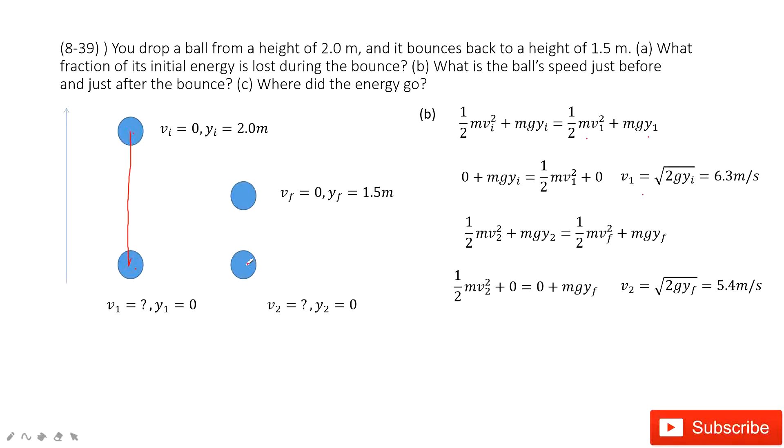Similarly, we consider from V2 to the final position. In this process, only gravity does the work, so mechanical energy is conserved. The energy at position 2 equals the energy at the final position. Inputting the known quantities v_f and y2, we get that v2 is 5.4 meters per second. We see V1 is not equal to V2, and some energy is lost.